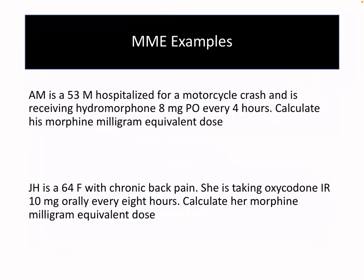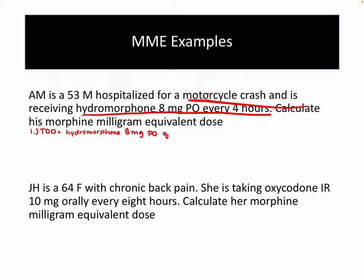You have a patient who had a motorcycle crash and is receiving hydromorphone 8 milligrams PO every four hours, and you want to calculate the morphine milliequivalent dose. The first thing you want to do is calculate your total daily dose. Since the patient is getting 8 milligrams every four hours, that means 8 milligrams times 6 doses, giving 48 milligrams of hydromorphone per day.